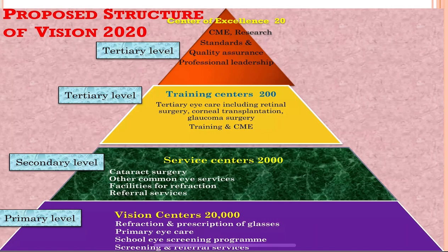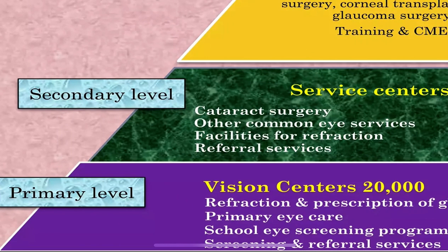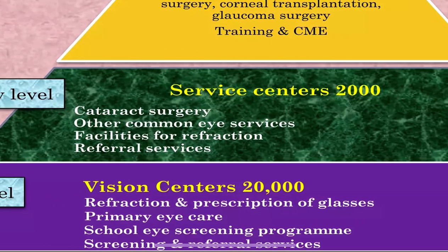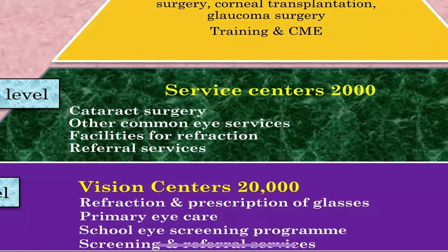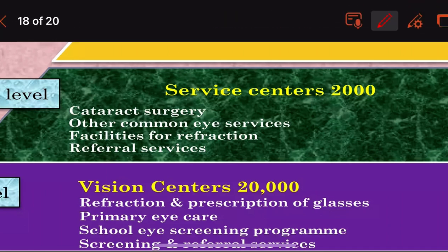At the primary level, about 20,000 vision centers are set up, where refraction and prescription of glasses is done, along with primary eye care, school eye screening programs, and screening and referral services.